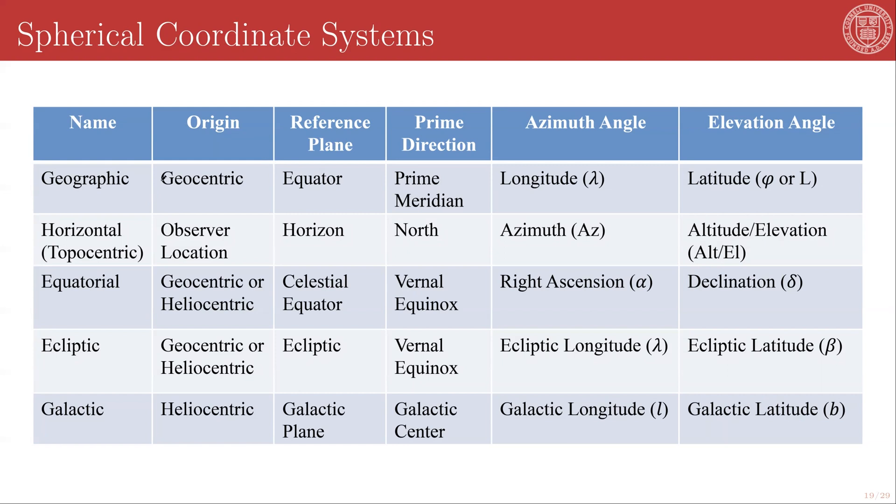So when measuring things on the Earth we can use a geographic coordinate system. Its origin is the center of mass of the Earth, its reference plane is the equator, its prime direction is the prime meridian, and the angles, the azimuth angle is called the longitude and the elevation angle is called the latitude. Frequently in literature this will be noted by phi. We've previously defined phi as strictly a polar angle so we will typically be calling this capital L. You can also do a frame that is anchored to the surface of the Earth at the location of the observer and it takes the reference plane of the horizon, a prime direction of north, and its angles are called the azimuth and the elevation. And we'll be coming back to this one because it's incredibly important for Earth-based measurements.